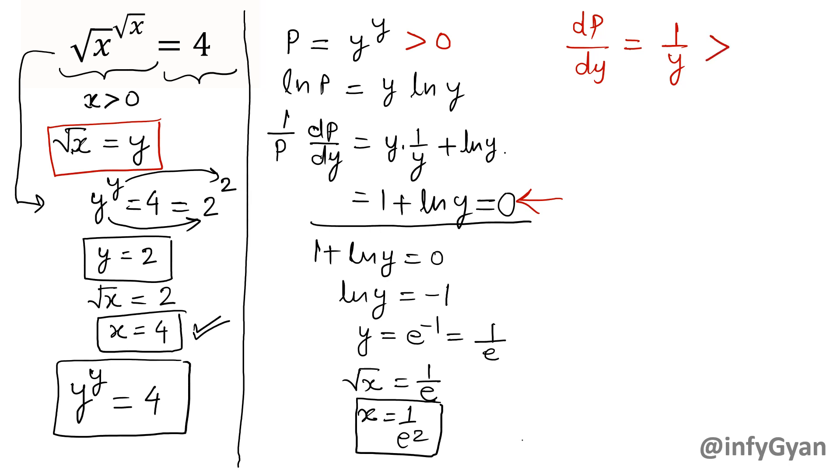So it is always positive. Means if I am putting the value of x = 1/e², that value will come out. So that means x = 1/e² is the point where minima is attained.